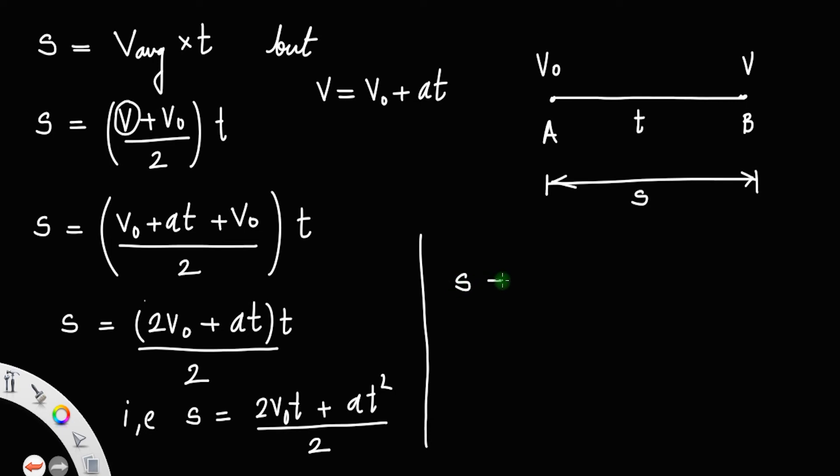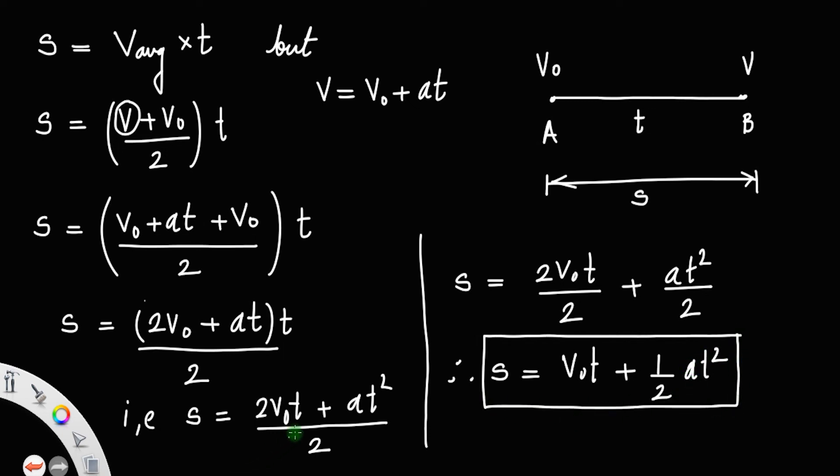You can divide this 2 with each of these terms, that is 2v0t divided by 2 plus at square divided by 2. Therefore, you can cancel this 2 and 2, the term will be v0t plus half at square. S equal to v0t plus half at square, that is our second kinematic equation.